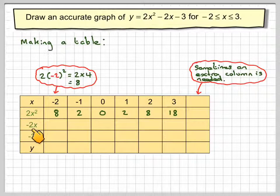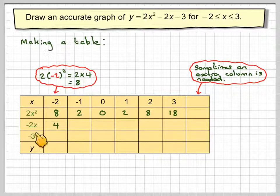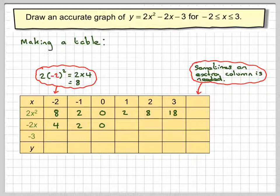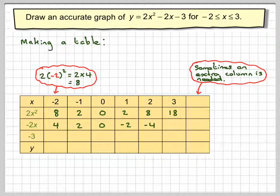This row is slightly more straightforward — we just have to work out minus 2 times each x value. Minus 2 times minus 2 is plus 4; minus 2 times minus 1 is plus 2; minus 2 times 0 is 0; minus 2 times 1 is minus 2; minus 2 times 2 is minus 4; and minus 2 times 3 is minus 6.